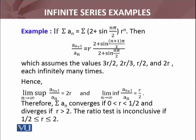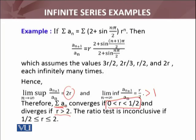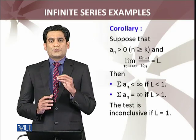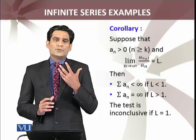So we can apply the ratio test which we have just learned. Therefore summation an converges if limit superior less than 1, that will be less than 1 whenever r is between 0 and 1/2. And this series diverges if r is greater than 2, because limit inferior greater than 1 only when r is greater than 2. And the ratio test is inconclusive - we can't say anything about the divergence or convergence of that series if r is between 1/2 and 2.